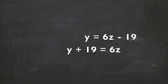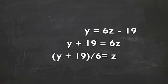Solving for z, we add 19 to both sides. Then we divide by 6, giving us y plus 19 over 6 equals z.